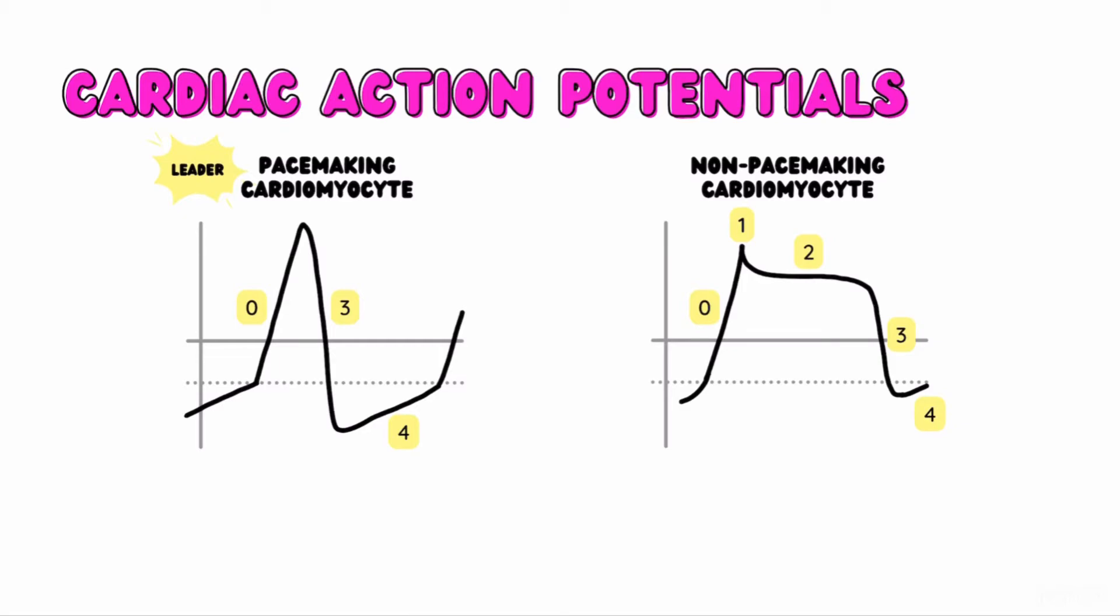Let's start with the pacemaking cells. In phase 0, the pacemaking cells reach the threshold potential, and the rapid all-or-nothing depolarization phase of the action potential begins. In phase 3, the pacemaking cells hyperpolarize to below the threshold potential. And during phase 4, pacemaking cells gradually depolarize to reach the threshold potential and begin firing another action potential all over again.